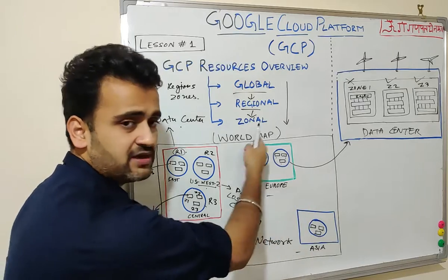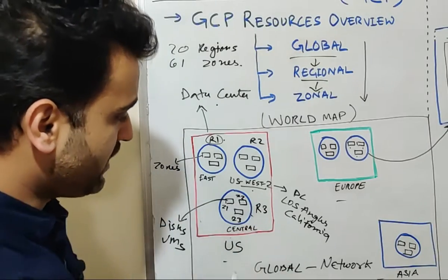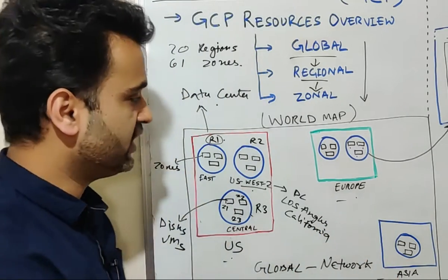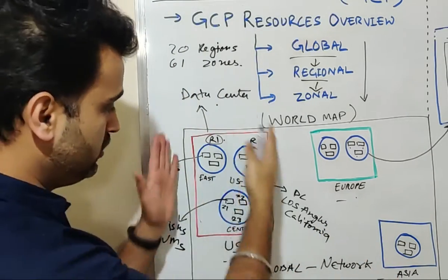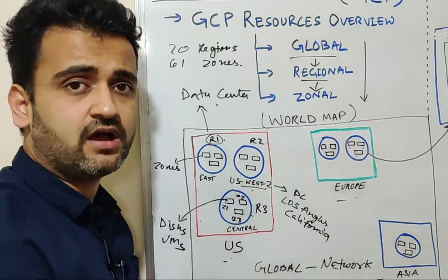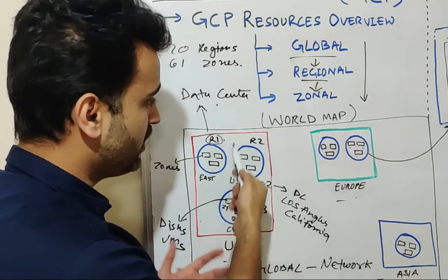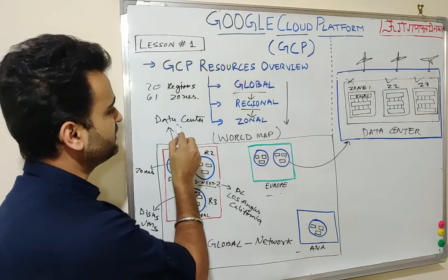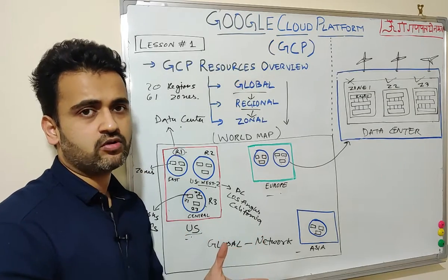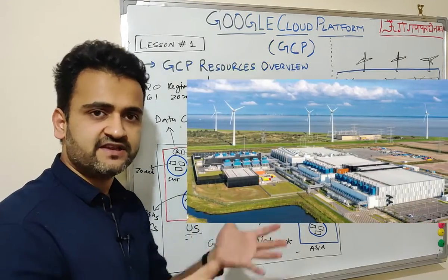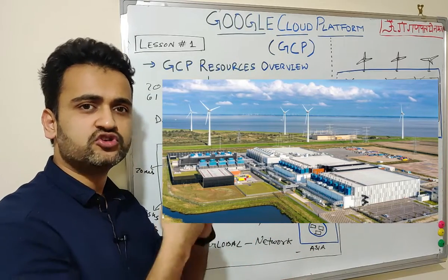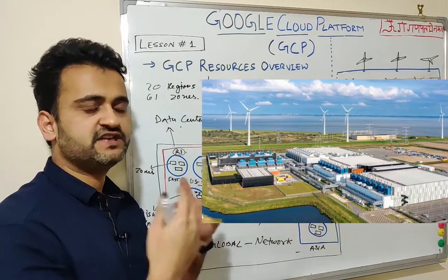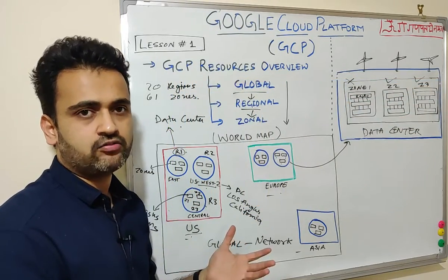Consider this as a world map. In this world map, if you consider different regions, this can be US, this can be Europe, this can be Asia. Within the whole US region, you can have multiple regions like region one, region two, region three. Every region within that particular country is actually a data center. A data center is a physical area where you install your infrastructure and hardware devices, which gives all the capabilities required by any cloud platform.